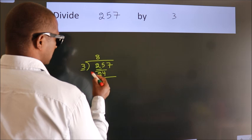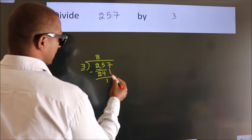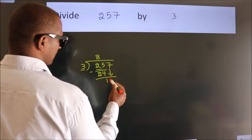Now, we subtract. We get 1. After this, bring down the next number. So, 7 down.